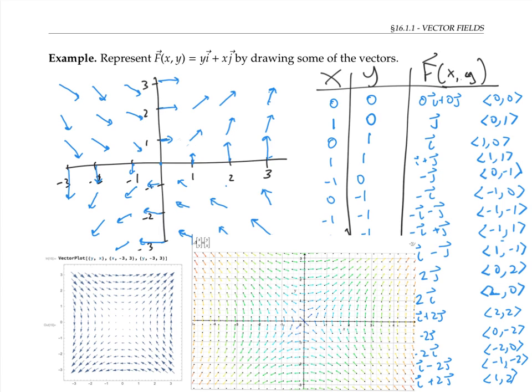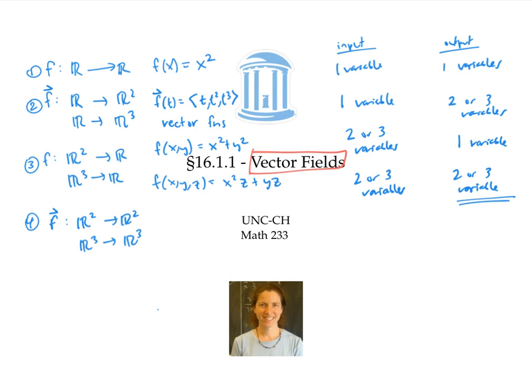In this class, you won't be expected to graph a lot of vector fields by hand, but you will be expected to identify whether the output of a software program actually matches the equation given so that you can tell when something goes horribly wrong. This video introduced vector fields, which are functions whose input is two or maybe three variables, and whose output can be thought of as a vector with two or maybe three variables. We also showed how you can represent vector fields as a bunch of arrows graphed on the plane or in space.